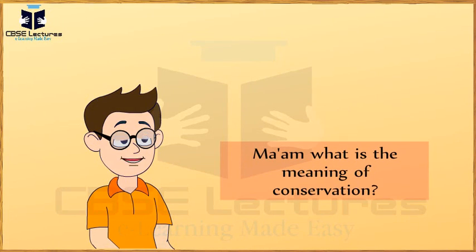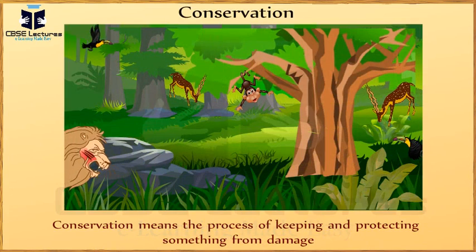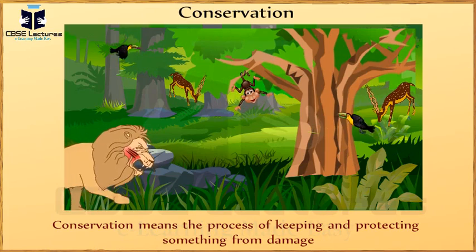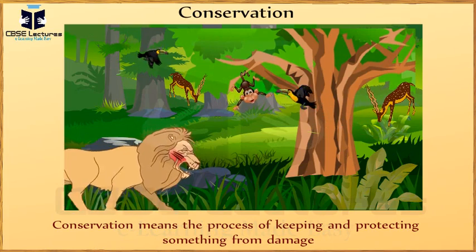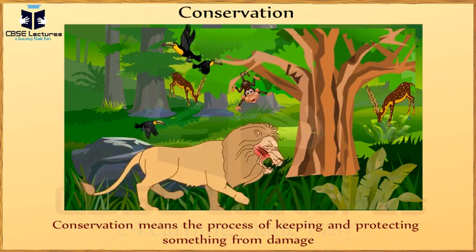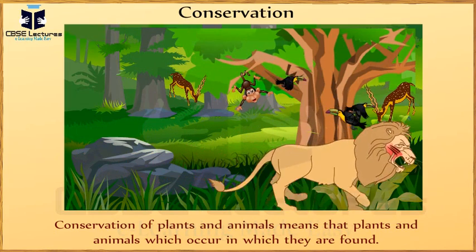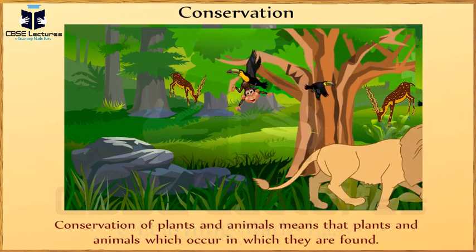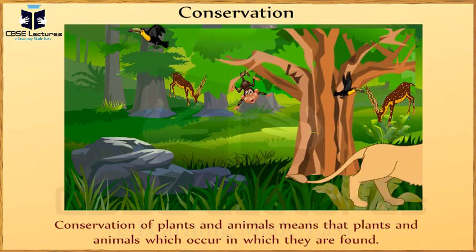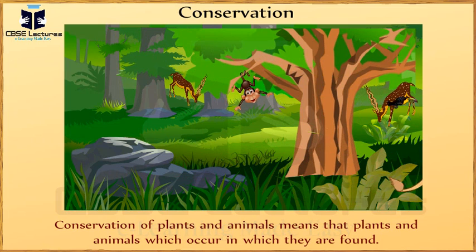Ma'am, what is the meaning of conservation? Conservation means the process of keeping and protecting something from damage. Conservation of plants and animals means that plants and animals are protected in the areas in which they are found.